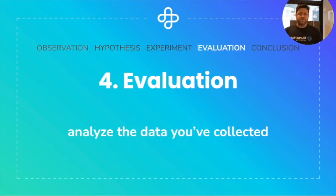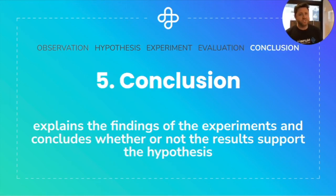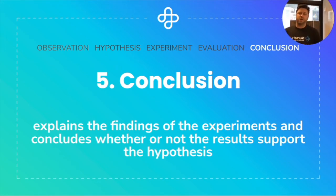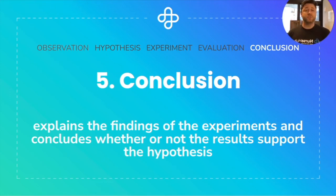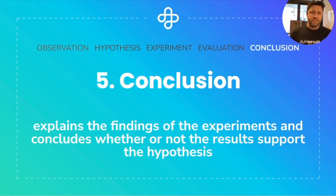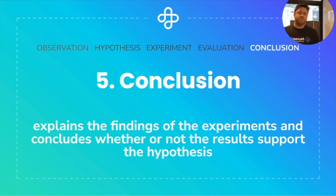The fourth step is evaluation — this is when you collect and analyze all of the data from your experiment in order to do the fifth step, which is to draw a conclusion. You explain the findings of the experiment and conclude whether or not the results support or refute the hypothesis. For me: I made the observation that my phone wasn't charging; my hypothesis was that the old charger was likely broken; my experiment was replacing the old charger with a new one; the evaluation was seeing that the new charger did indeed work; and my conclusion was that the old phone charger was indeed broken. End of experiment.